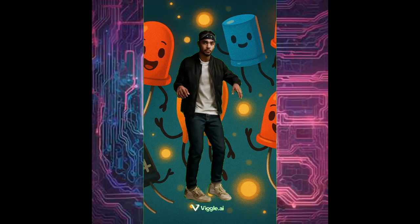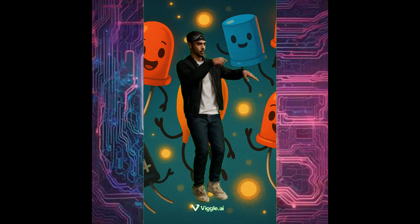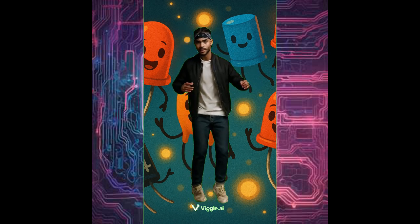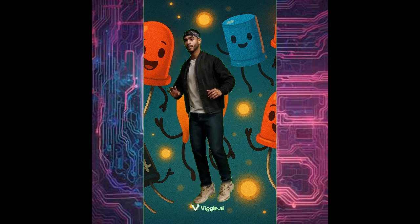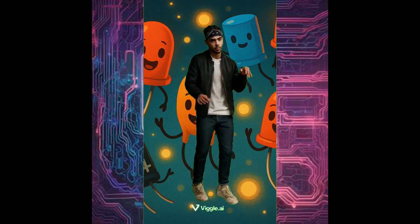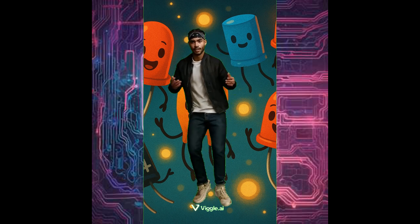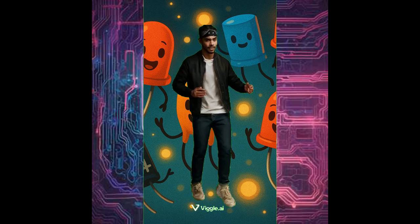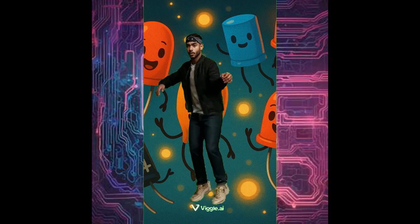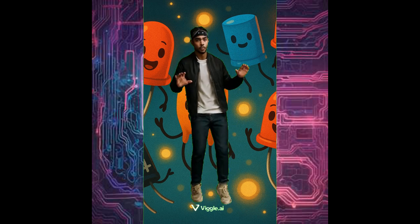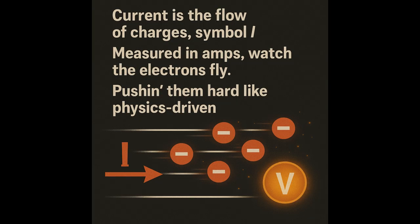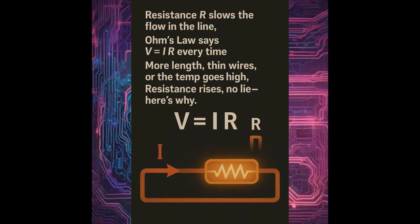Voltage pushing like pressure that's higher, current in amps and resistance in ohms, physics in the beat while the circuit blows. We got that IGCSE electricity flow, yeah, we set it free. Here's the flow of charges, symbolize, measured in amps, watch the electrons fly. Voltage is the energy per coulomb given, pushing them hard like physics driven.